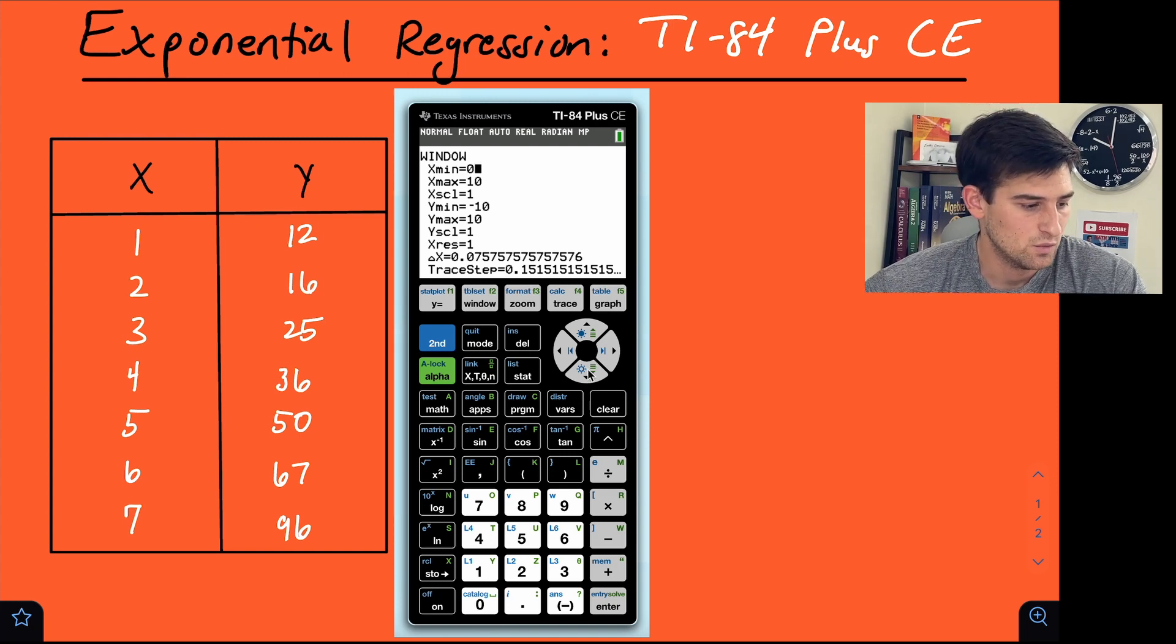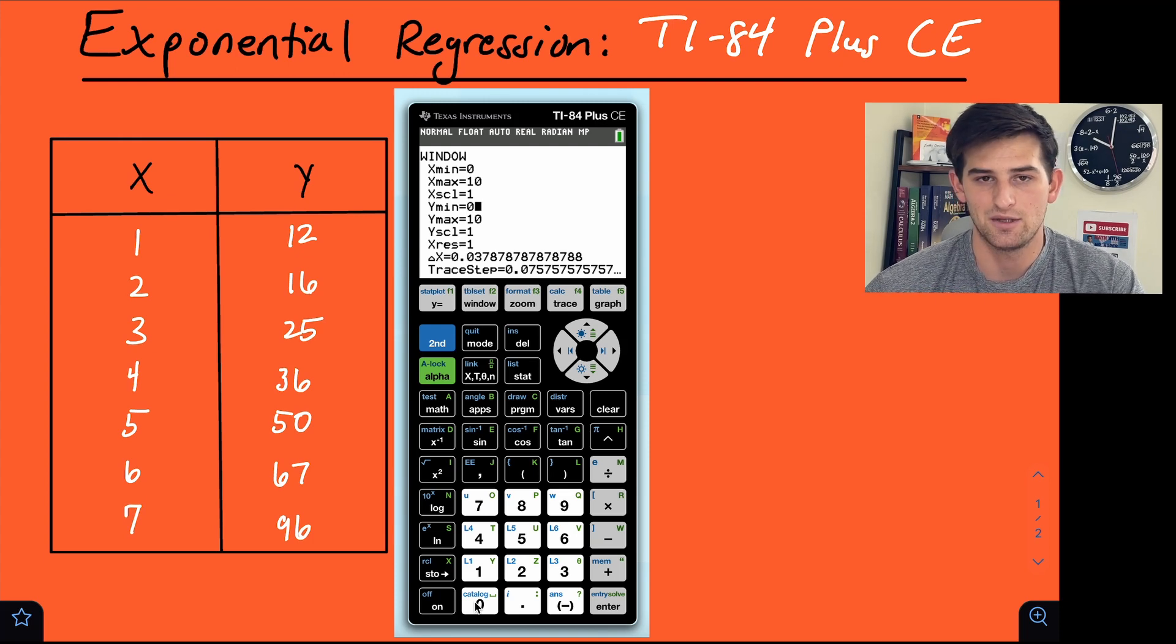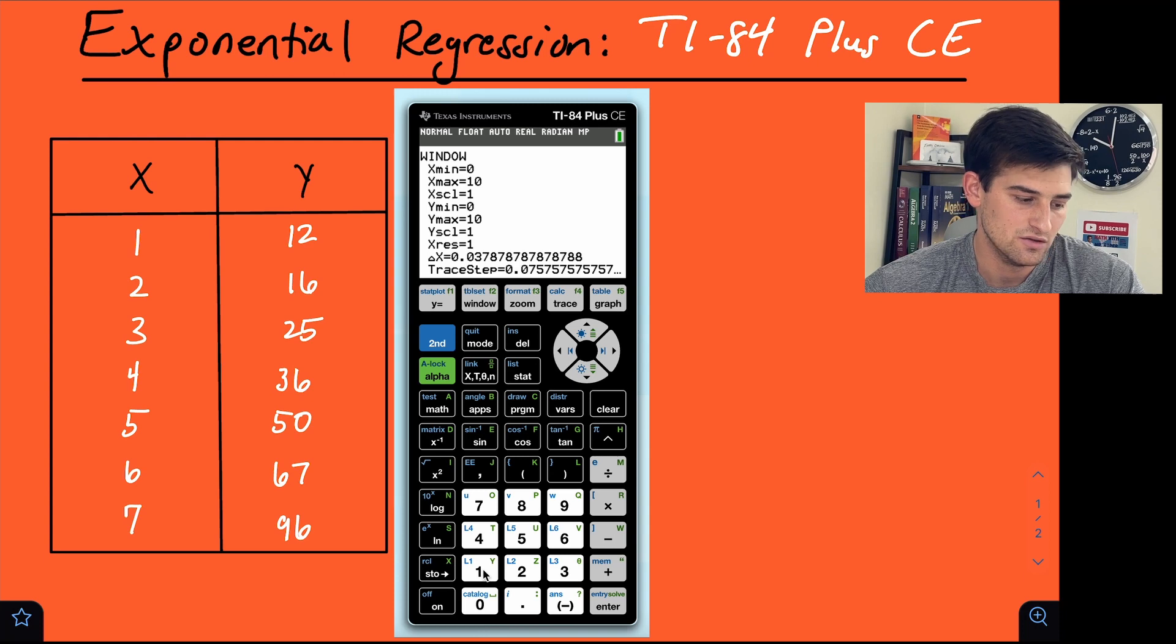If we remember our data points that are on the screen for x min and x max, we can change x min to zero because our lowest x value is just one. And let's just leave x max at 10 because we need to at least see one through seven. Now let's go down to y min. So let's change this to zero. We could do 10 or something like that because the lowest y value we need to see is 12, but let's just leave it at zero.